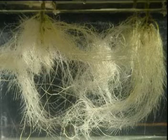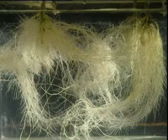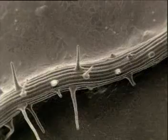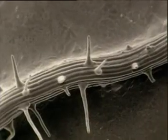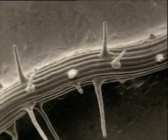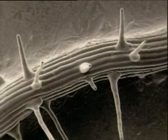Roots have hairs too. These are vital for the plant to absorb minerals. The many hair cells on this single root increase its surface area, making it easier to absorb nutrients.